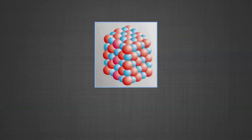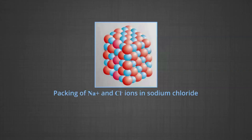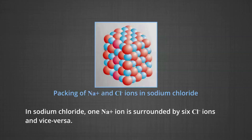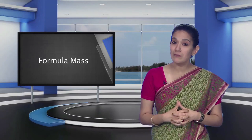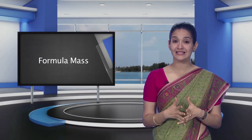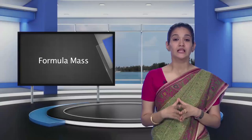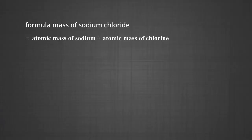The arrangement of sodium and chloride ions in the NaCl structure is shown in a figure. It may be noted that in sodium chloride, one Na⁺ ion is surrounded by six chloride ions and vice versa. The formula such as NaCl is used to calculate the formula mass instead of molecular mass, as in the solid state sodium chloride does not exist as a single entity.